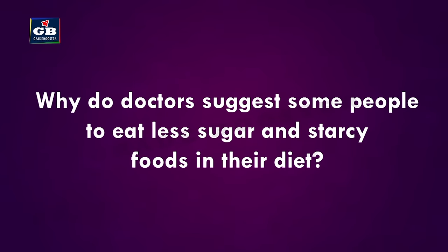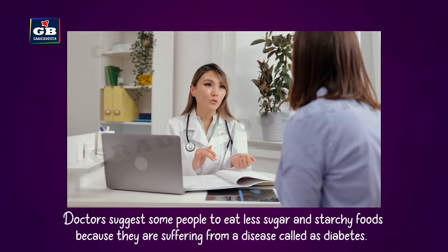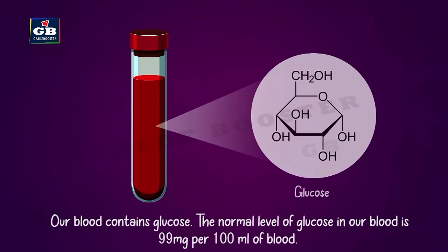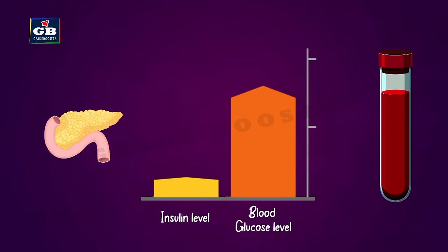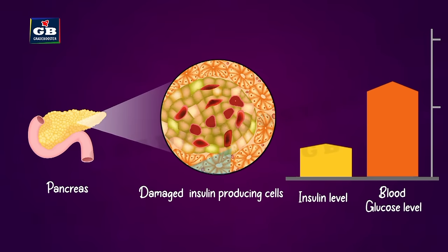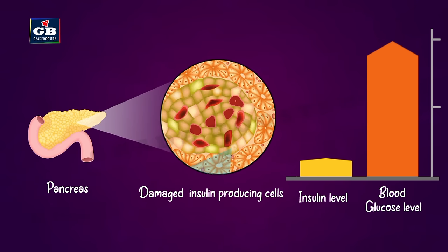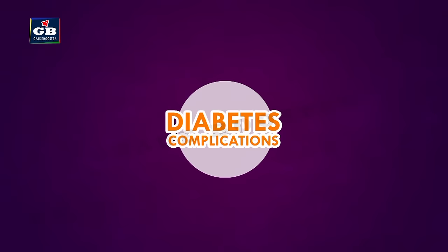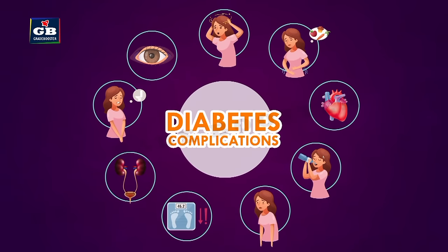Doctors suggest some people eat less sugar and starchy foods because they suffer from diabetes. The normal blood glucose level is 99 mg per 100 ml of blood. When blood glucose rises, the pancreas secretes insulin to control it. In some people, malfunctioning insulin-producing cells in the pancreas produce very little insulin, leading to high blood sugar — a condition called diabetes. High blood sugar causes harmful effects, and diabetic people are more prone to heart, kidney, eye, and nerve diseases.